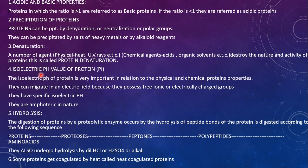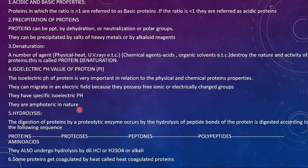Coming to the isoelectric pH value of protein: proteins possess free ionic or electrically charged groups and migrate in an electric field. Just as amino acids possess a specific isoelectric pH, proteins also have a specific isoelectric pH. Proteins are also amphoteric in nature — they possess both cationic and anionic forms, meaning they can donate a proton or accept a proton.